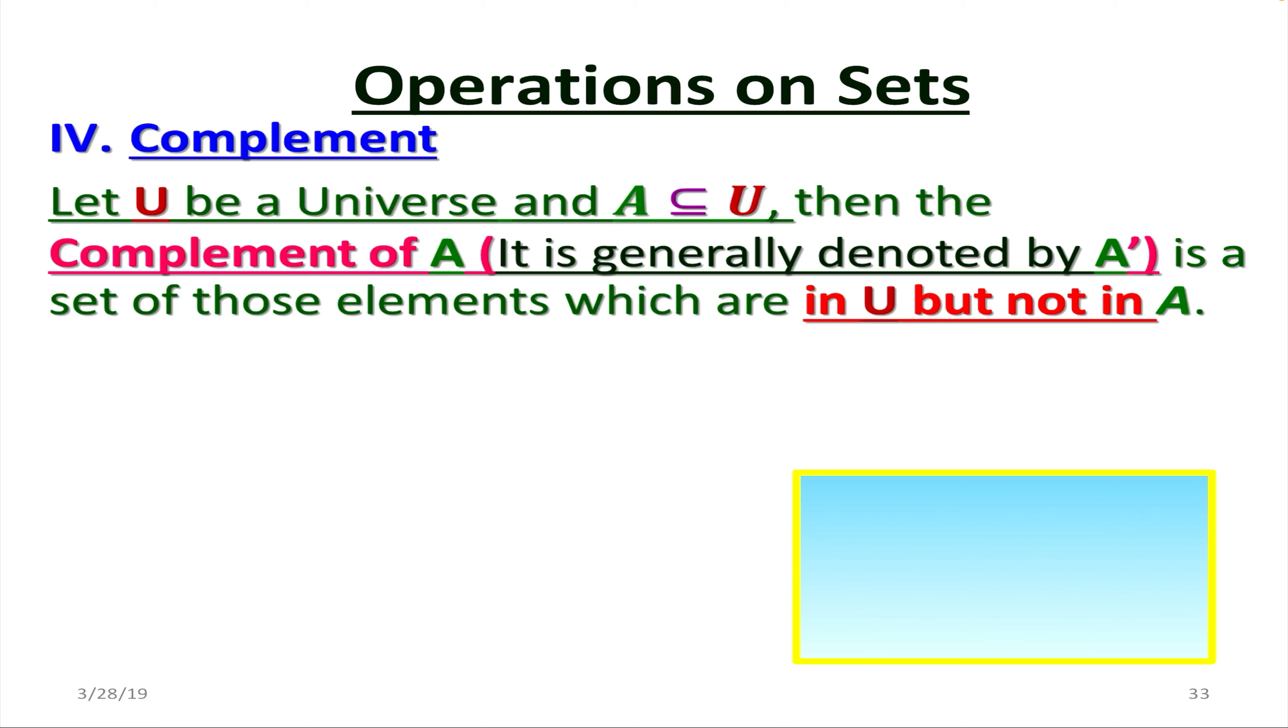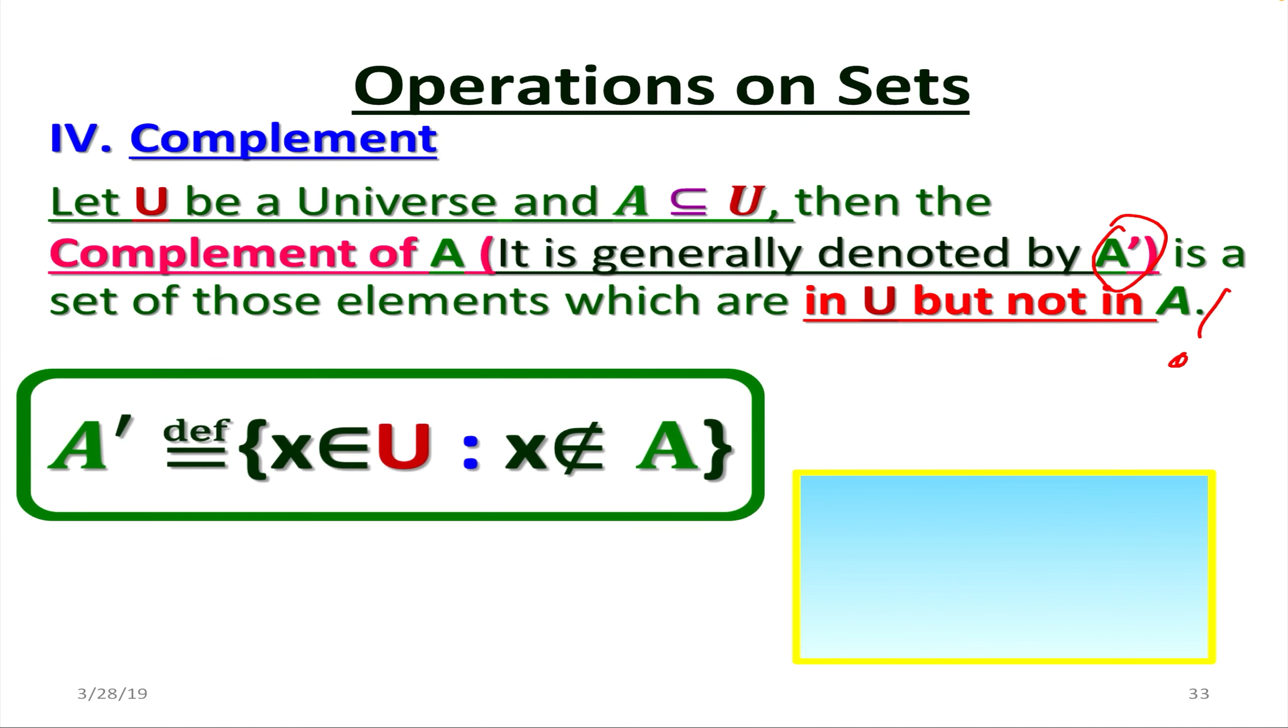The next one is going to be the complement of a set. Let U be a universe and A is a subset of U. Then the complement of set A is generally denoted by, and we say A prime, so A kind of apostrophe, is a set of those elements which are in U but not in A.